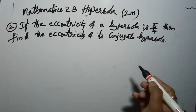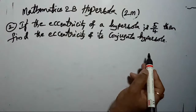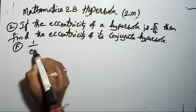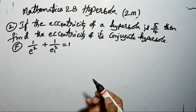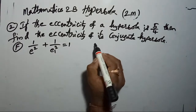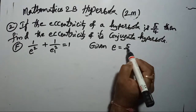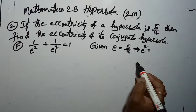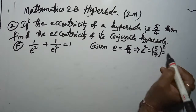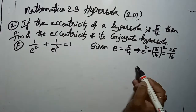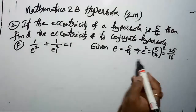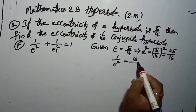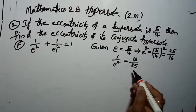We are given the eccentricity of the hyperbola, and we need to find the eccentricity of its conjugate hyperbola. Using the formula 1/E² + 1/E₁² = 1, and the given eccentricity E = 5/4: squaring both sides gives E² = (5/4)² = 25/16. Taking the reciprocal, 1/E² = 16/25.